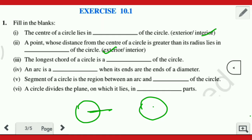Third question: the longest chord of a circle is a dash of the circle. Sabse longest chord ko hum kya kahte hain — woh chord jo center se ho kar jaati hai. To aisi chord jo center se ho kar jaaye use kya kahte hain? Diameter. That is diameter. Yahan ho jaayega diameter.